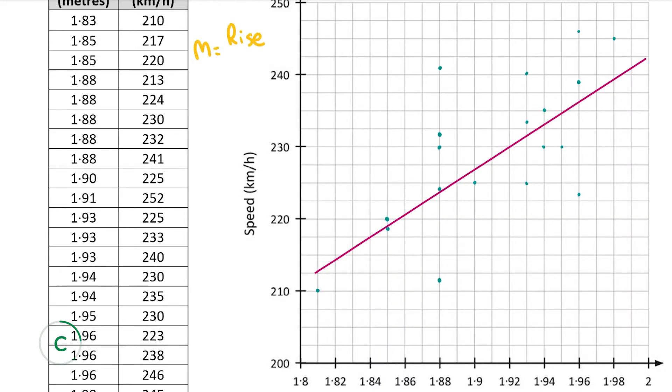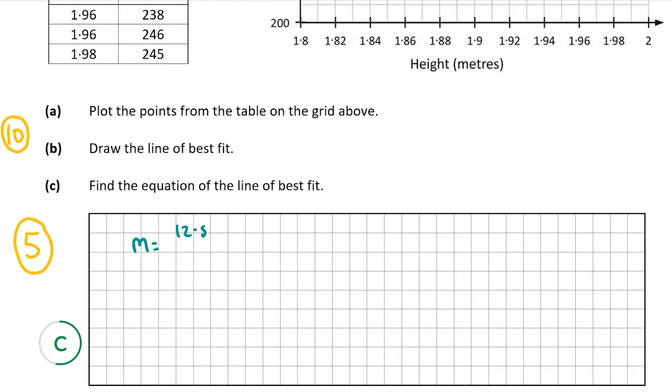So I'm going to pick two points on the line and then we're going to do rise over run. I'm going to pick this point here and this point down here and let's see how much it rises by and how much it runs by. Obviously the rise is how much it goes up. So it's a rise from 217.5 to 230, which is going to be 12.5. Then it's a run from 1.84 to 1.92, which is 0.08.